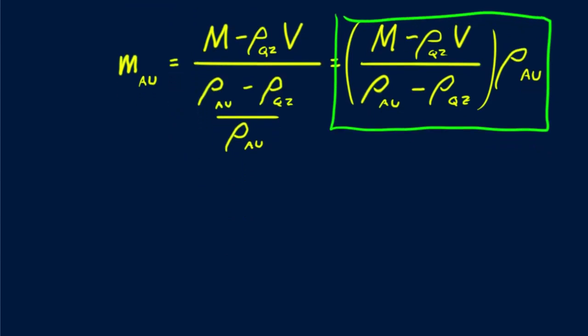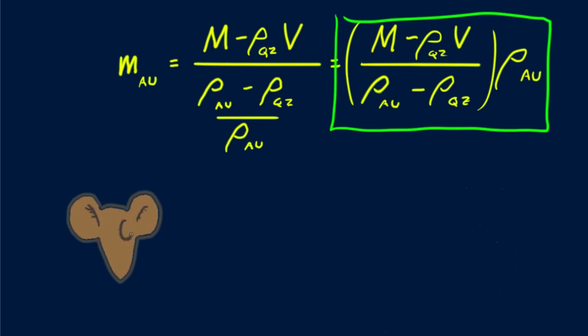And units of measurement check. We see grams in the numerator and the units of densities cancel out, so our mass is in grams. How wonderful! The mass of gold in the chunk can be determined by knowing only the mass and volume of the chunk, plus the densities of gold and quartz. And of course, assuming that no other minerals are present.